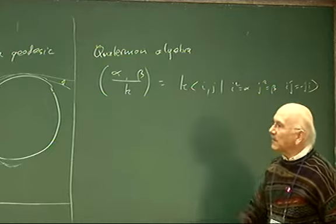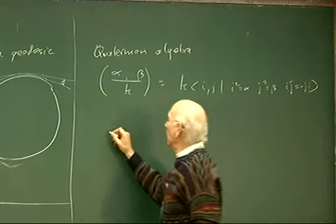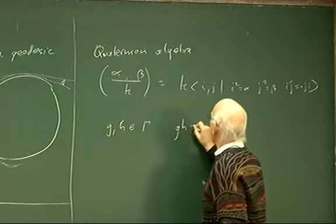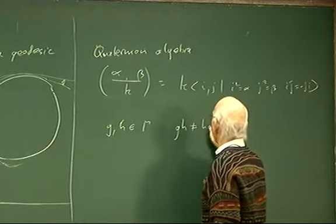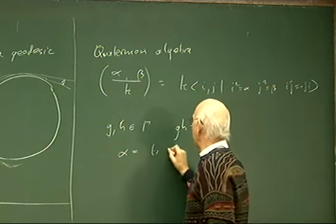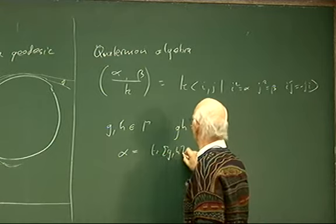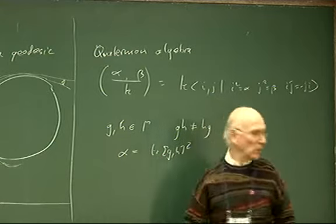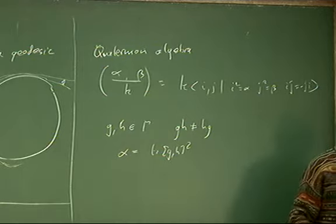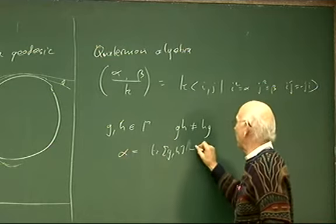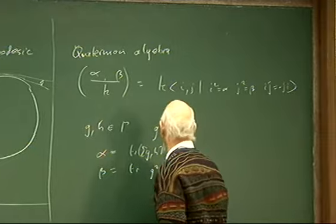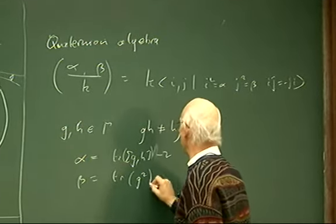If you know the Hilbert symbol, it's not too hard to work out where the ramification is and therefore get the list of primes — the more convenient classifying object for the quaternion algebra. How do we compute these in the case of a manifold? If we pick two elements g, h in our group γ such that they don't commute, we can always take α = tr([g,h]) − 2 and β = tr(g)² − 2.